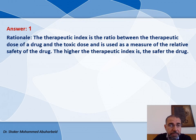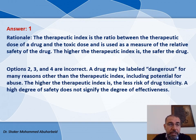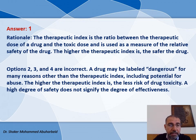The therapeutic index is the ratio between the therapeutic dose of a drug and the toxic dose, used as a measure of relative drug safety. The higher the therapeutic index, the safer the drug. Options two, three, and four are incorrect. A drug may be labeled dangerous for reasons other than the therapeutic index, such as potential for abuse. A high therapeutic index means less risk of toxicity, but does not signify greater effectiveness.